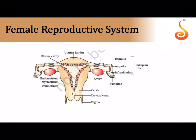In the diagrammatic representation of the female reproductive system, a pair of ovaries is visible on either side. The fallopian tube is divided into a funnel-like infundibulum bearing finger-like projections called fimbriae, which help pick up the egg from the ovary. The broadest and longest part is called the ampulla; the narrow part is the isthmus. The fallopian tube joins the pear-shaped uterus, whose bulged upper part is called the uterine fundus.